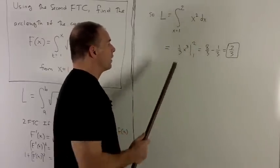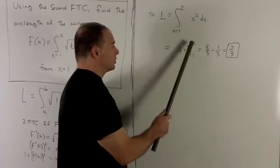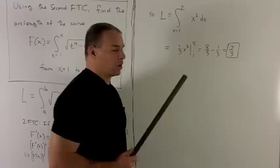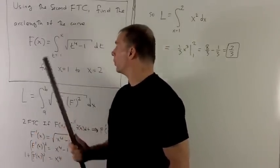I take the antiderivative, that gives me 1 third x cubed. We evaluate at 2 and 1 and take the difference, so I wind up getting 7 thirds for the arc length of this function from 1 to 2.